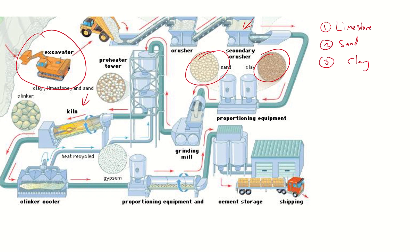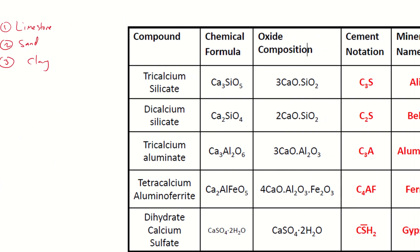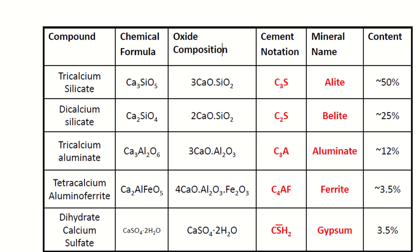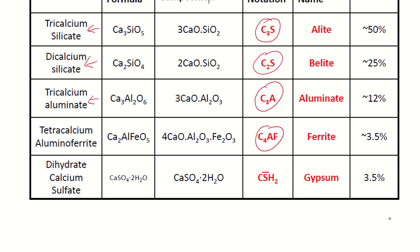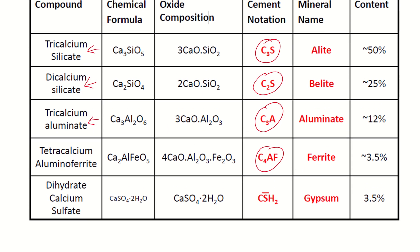This whole procedure has to happen because we need to produce the four key compounds. The constituents in cement consist of C3S, which is tri-calcium silicate; C2S, which is di-calcium silicate; C3A, which is tri-calcium aluminate; and the ferrite, which is tetra-calcium aluminum ferrite. All four of these need to be produced.